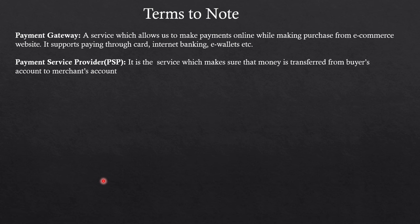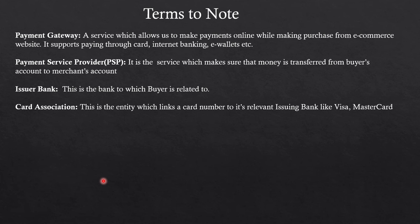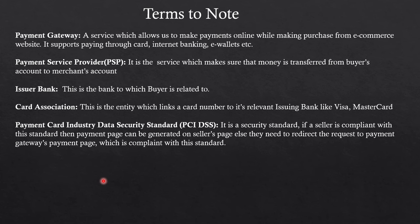The issuer bank is the bank associated with the buyer — the bank that has issued the debit card, credit card, or UPI to the user so they can buy things online. Card association is the entity that provides the number for your credit card and debit card — organizations like Visa, Mastercard, and American Express.